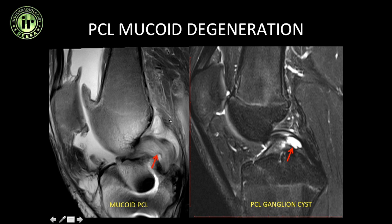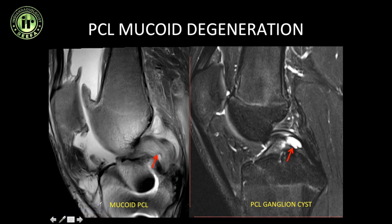Regarding mucoid degeneration of the PCL: the ligament will appear bulky and hyperintense, but you can still see all the ligament fibers intact. This is how you differentiate a tear from mucoid degeneration of the posterior cruciate ligament. This patient also has an intrasubstance ganglion cyst.